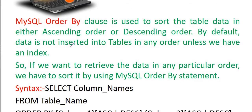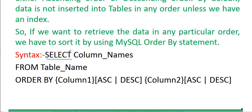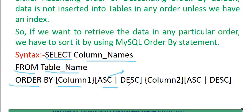The ORDER BY clause is used to sort table data in either ascending or descending order. By default, data is not inserted into a table in any order unless we have an index. By default, the ORDER BY clause sorts data in ascending order. Syntax: SELECT [column_name] FROM [table_name] ORDER BY column1 ASC (ascending), column1 DESC (descending), column2 ASC, column2 DESC.